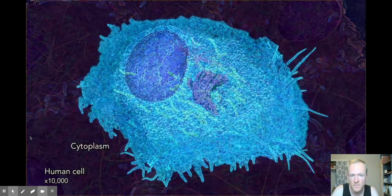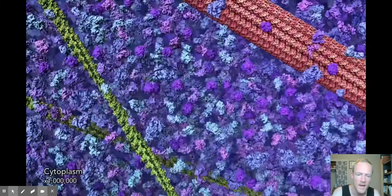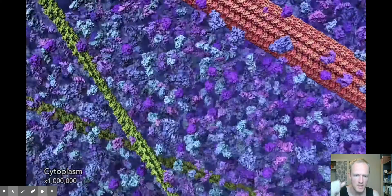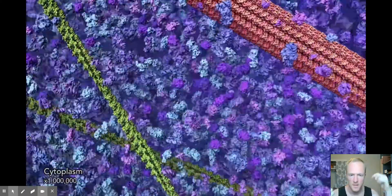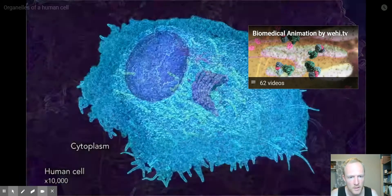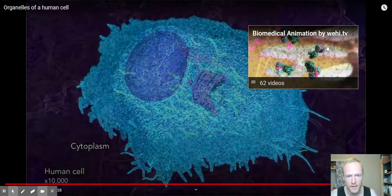The cytoplasm is everything else that's inside the cell besides the organelles. Here we have nutrients, amino acid building blocks, glucose, ions.